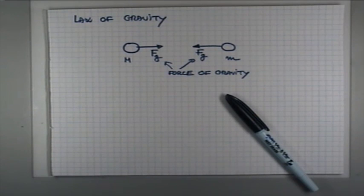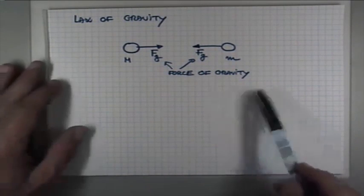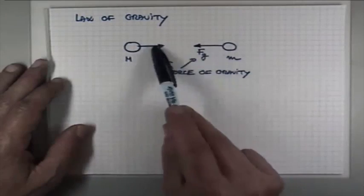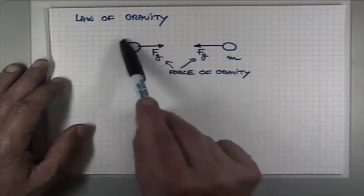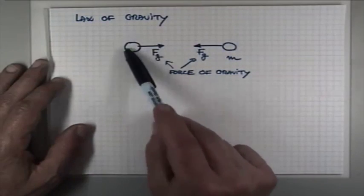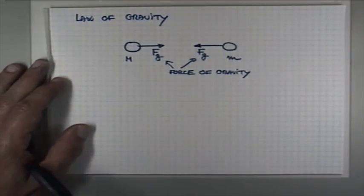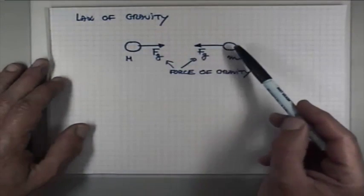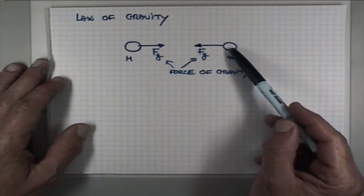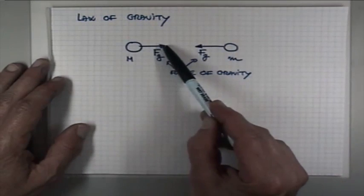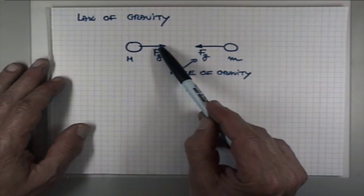So it is a part of the requirement of the third law of motion that the force is always coming. If the Earth is exerting a gravitational pull on the Moon, then the third law, the third Newton's law of motion requires that the Moon is also exerting the force on the Earth,